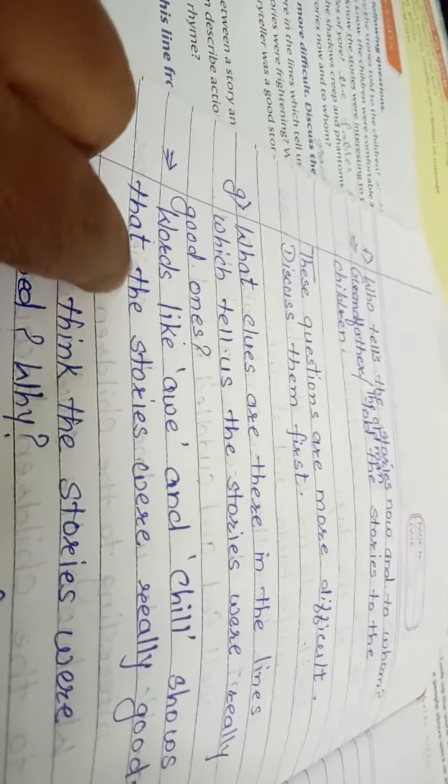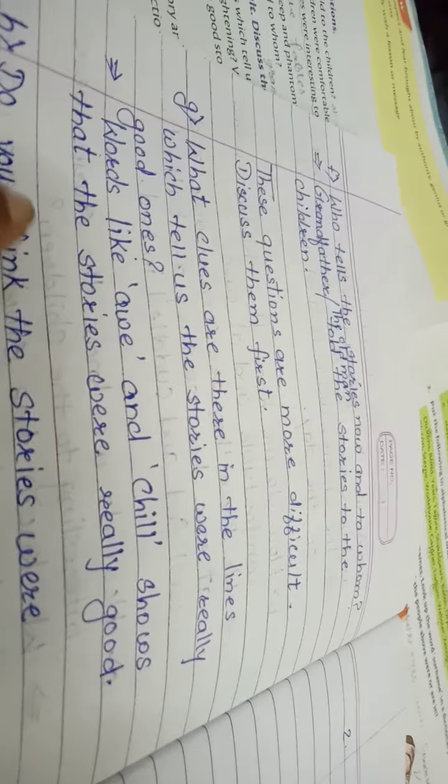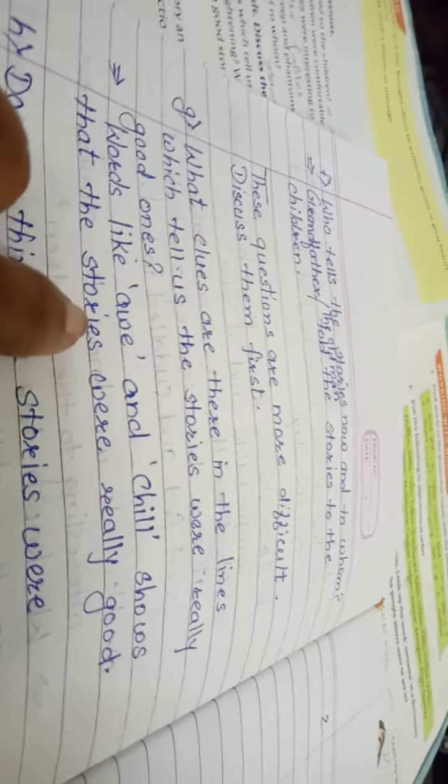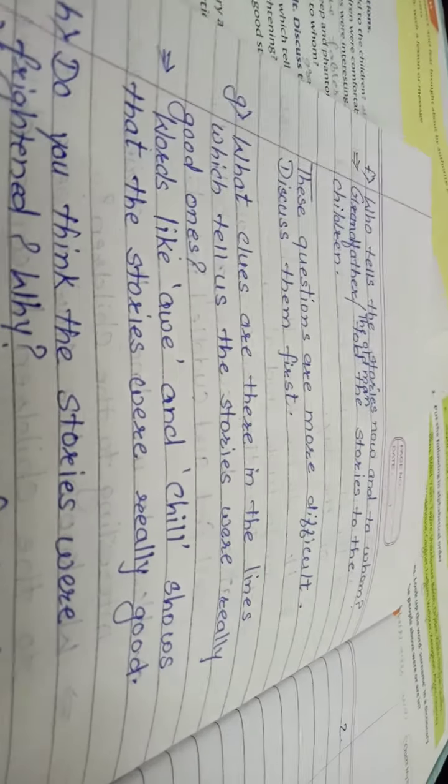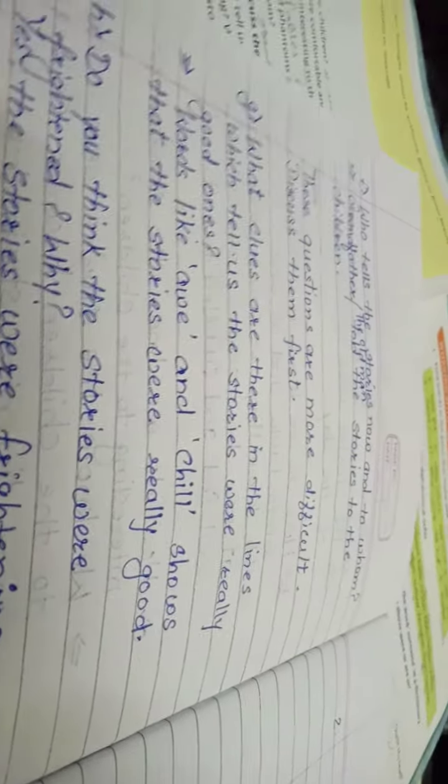Question number G. Words like aww and chill shows that the stories were really good. Jho aww and chill words jho hai ye aapko batate hai ki story jho hai woh sach me baha achi hai.